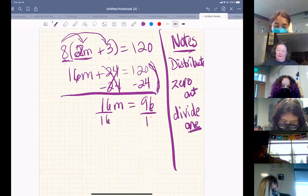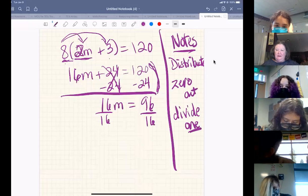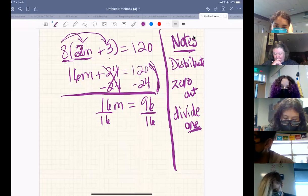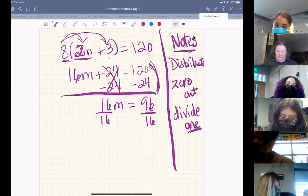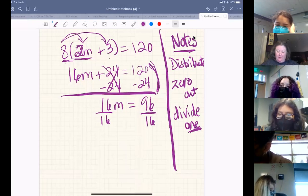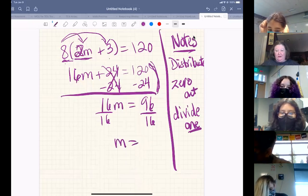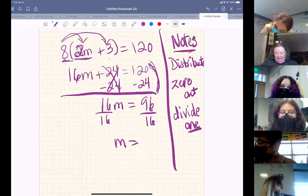We show division in these equations by drawing the line underneath to show division and put the number we're dividing underneath. 16 divided by 16 is invisible one. 96 divided by 16, I do have a calculator here, I'm not doing this in my head, is six.